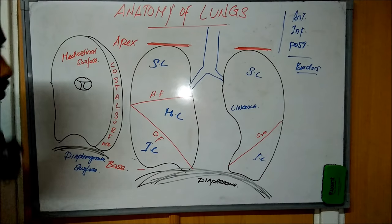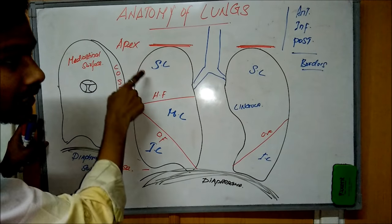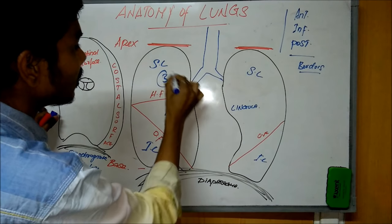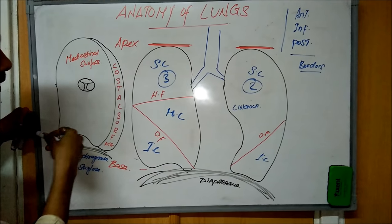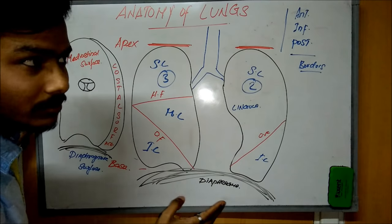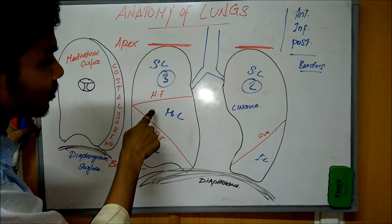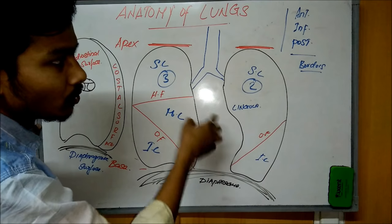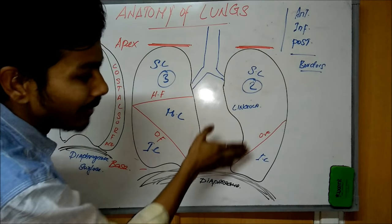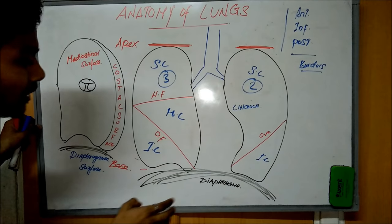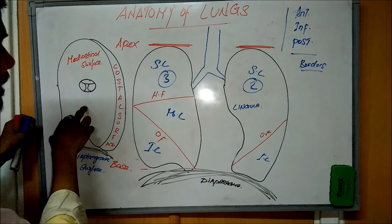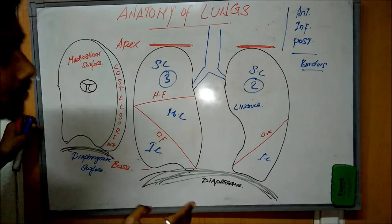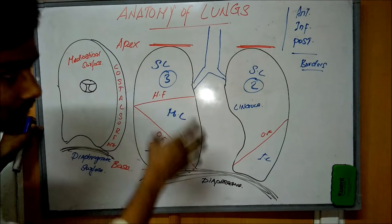To summarize the structures present in the lungs: we have the apex, the base, and the lobes. The right lung has three lobes and the left lung has two lobes, separated by fissures. The right lung has a horizontal fissure and an oblique fissure; the left lung has an oblique fissure. The left lung also has the lingula at the site of the cardiac notch. We have three surfaces — mediastinal, diaphragmatic, and costal — and three borders: anterior, inferior, and posterior.